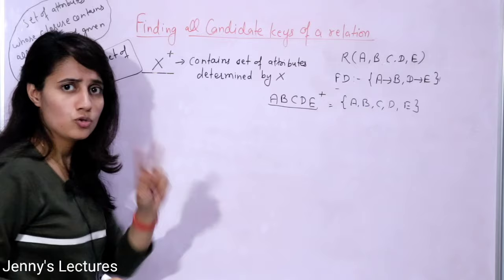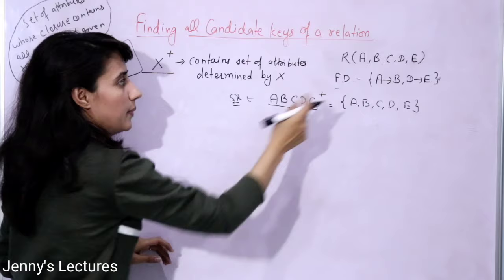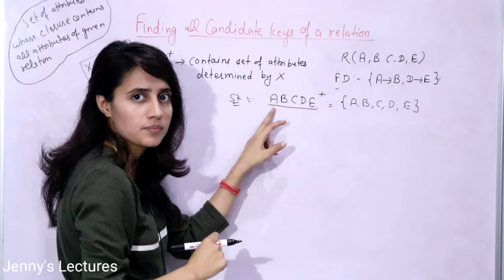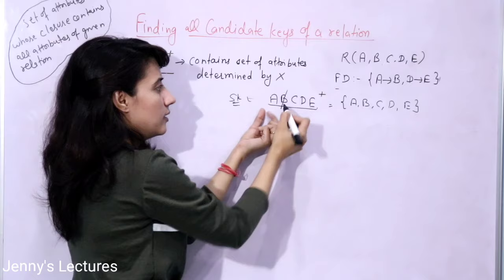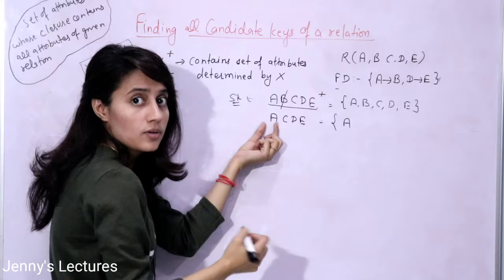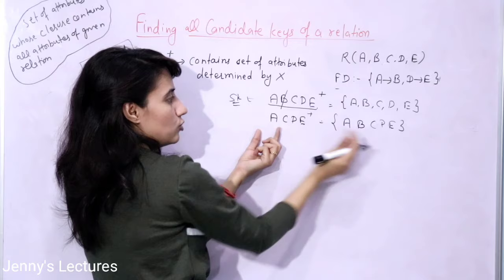The simple trick has two steps. First, take all the attributes — that is definitely a super key. Now check the functional dependencies. A can determine B, so if you have A you can determine B. Since A is already in the super key, you can discard B. So you now have A, C, D, E, and the closure still contains all attributes — this is still a super key.